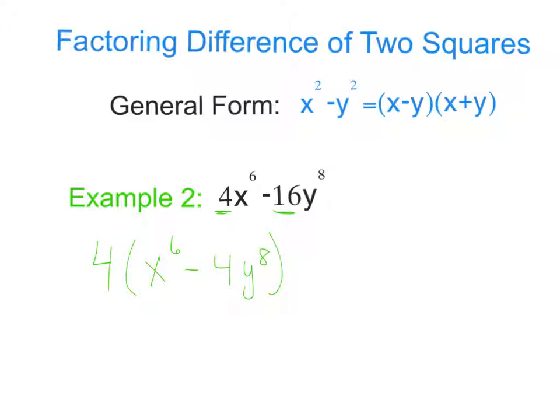And then what we notice is our exponents are a little different than the 2 that we are used to. But all we have to do is say, okay, what is the square root of x to the 6th? Remember, a square root is what times what equals itself, what times itself equals that result.